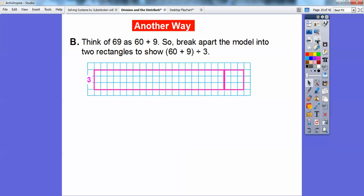So we're going to break this up. Here's one that has 60 squares right here, and here's one that has 9 squares. So here's my 60 plus 9 right there.